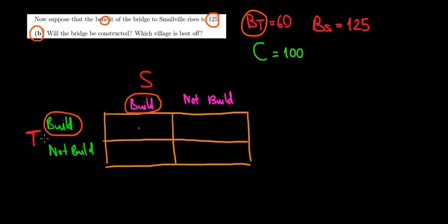If Tiny Town builds, his benefit is going to be 60 and the cost is going to be spread for the two of them, meaning that the cost is going to be 50-50. So we're going to have a 50-50 cost for Tiny Town. That would be a net result of 60 minus 50.